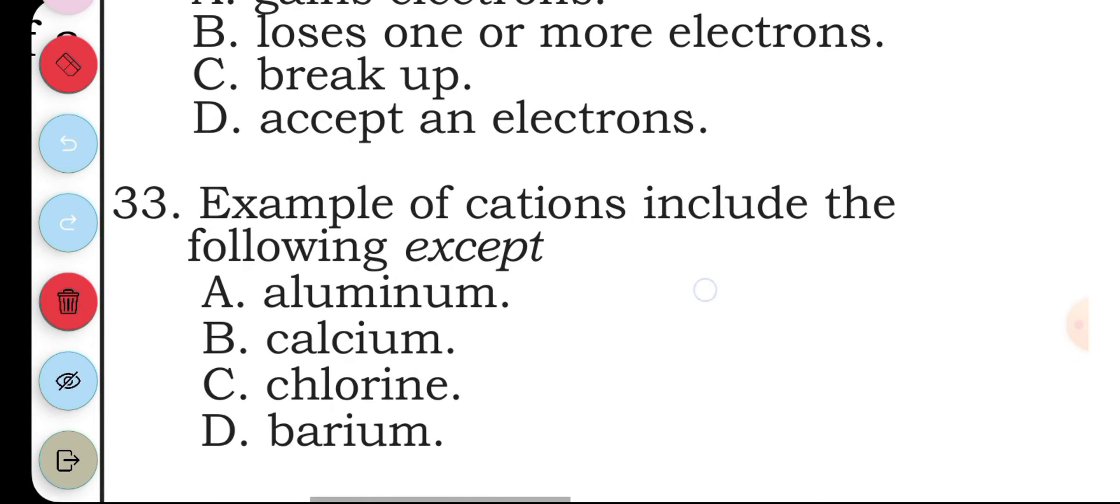Question thirty-three: examples of cations include the following except: A aluminum, B calcium, C chlorine, D barium. The answer to question thirty-three is C, chlorine.